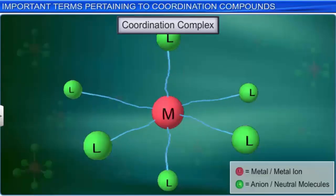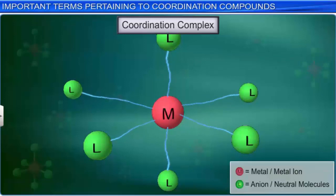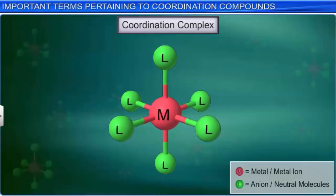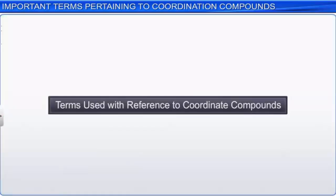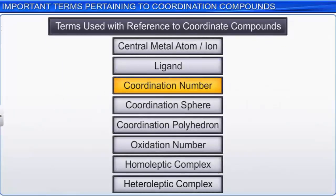A coordination complex is the product of a Lewis acid-base reaction, in which a central metal atom or ion forms coordinate covalent bonds with neutral molecules or anions called ligands. Similar to the terms central metal and ligand, there are other terms like coordination number, coordination sphere, coordination polyhedron, oxidation number, homoleptic complex, and heteroleptic complex, which are used with reference to coordinate compounds. You must get familiarized with these terms to understand different aspects of coordination chemistry.